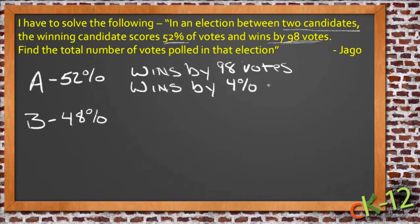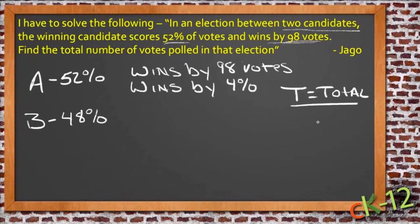4% of the total votes must be the same thing as 98 votes. So let's say that T equals the total votes — and that's what we're looking for. Let's write a little equation that uses this information: 4% multiplied by T equals 98 votes.